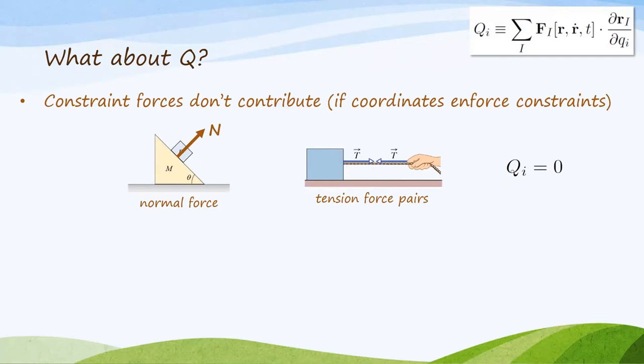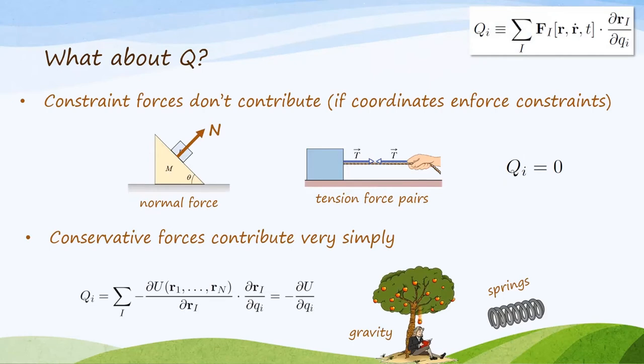So constraint forces don't contribute if you can find coordinates to enforce those constraints for you. Another kind of force that plays very nicely with Lagrangian mechanics is a conservative force, one that comes from a potential. And you can see from the equation on the lower left that, by the chain rule, if the Newtonian force came from a potential, then so does the generalized force. q sub i is just minus partial u partial qi. In mechanical systems, the most common conservative forces are gravity and spring forces, but there could be others.